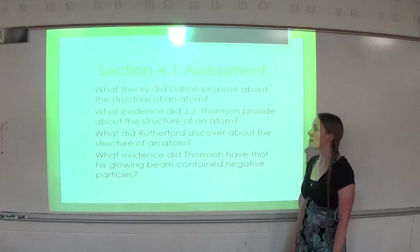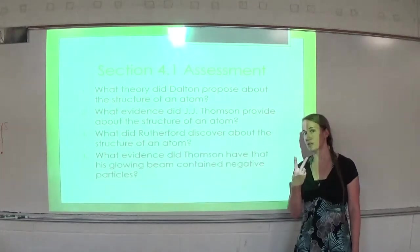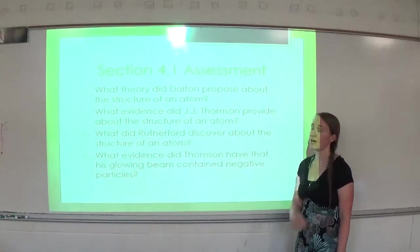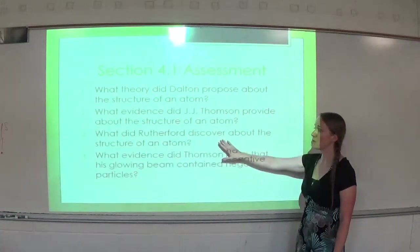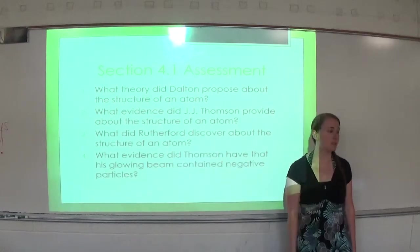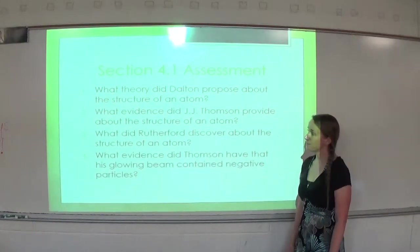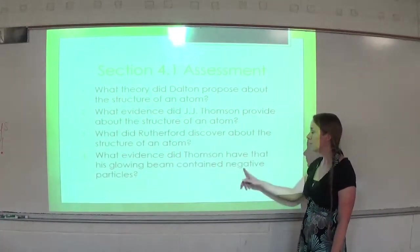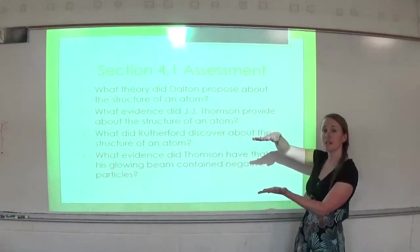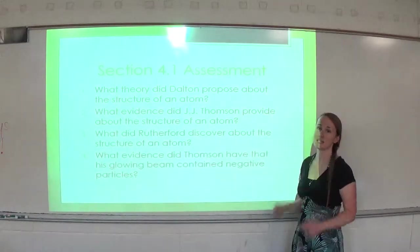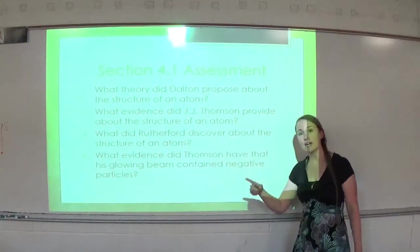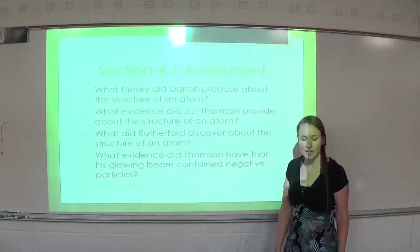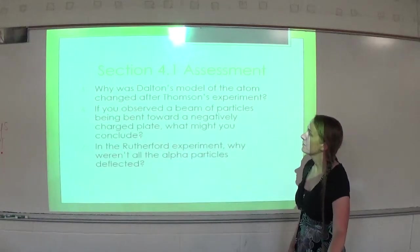Question three: what did Rutherford discover about the structure of the atom? He discovered two things: the nucleus, and that the atom is mostly empty space. Question four: what evidence did Thomson have that his glowing beam contained negative particles? He put the positive and negative plate on either side — the beam bent towards the positive plate. We know opposites attract, so it had to be made of negative particles.